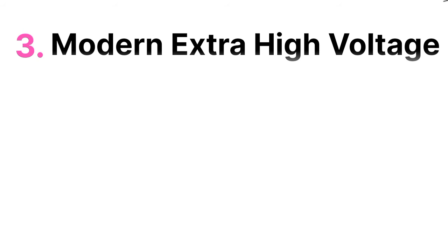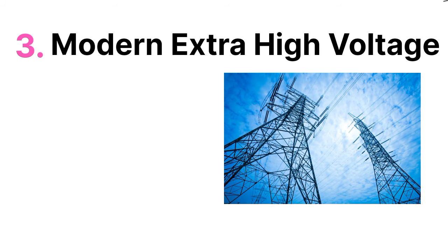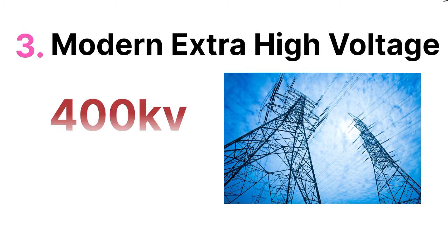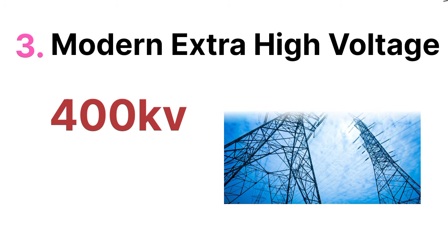The next one is the modern extra high voltage transmission line, that is MEHV. In the modern extra high voltage transmission line, the voltage level is generally 400 KV.